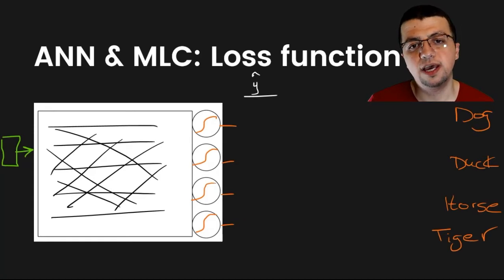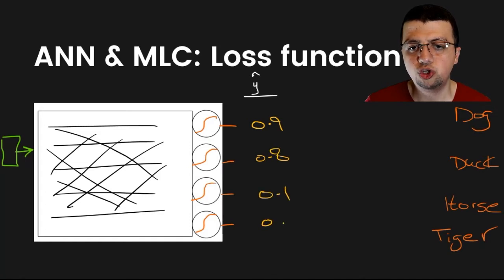So, let's say you've got values like 0.9, 0.8, 0.1, and 0.2.